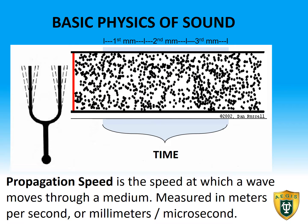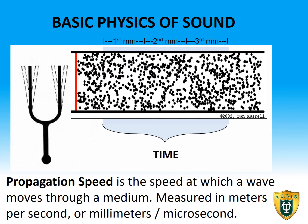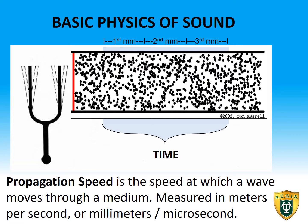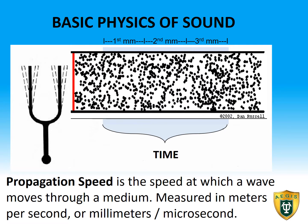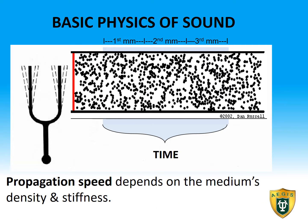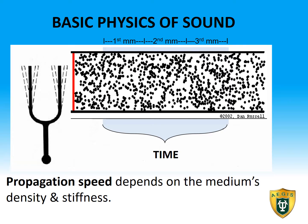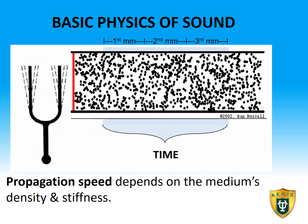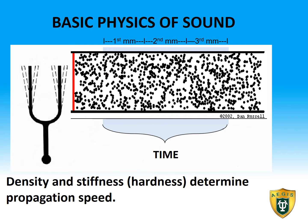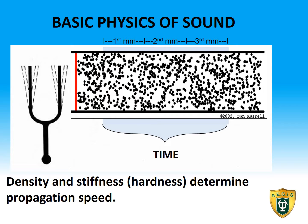Propagation speed is the speed at which a wave moves through a medium. It is measured in meters per second, or it can be measured in millimeters per microsecond. Propagation speed depends on the medium's density and stiffness; therefore, density and stiffness or hardness determine propagation speed.